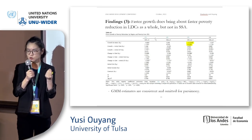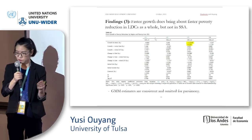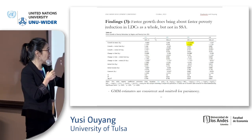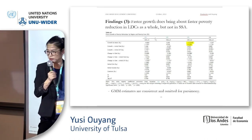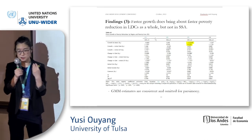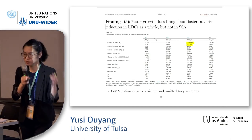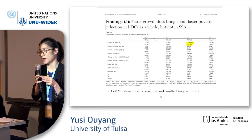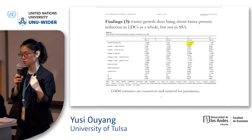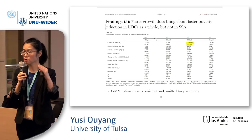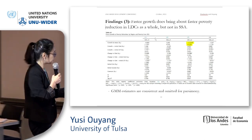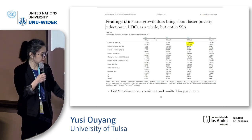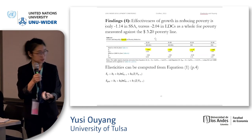The third finding confirms what we already know, with an interesting nuance. In general, we confirm that faster economic growth brings about faster poverty reduction. However, in Sub-Saharan Africa, poverty reduction is not responding to growth as much — perhaps related to the point that people improve but still do not cross the poverty line. GMM estimates are consistent and were omitted for parsimony.